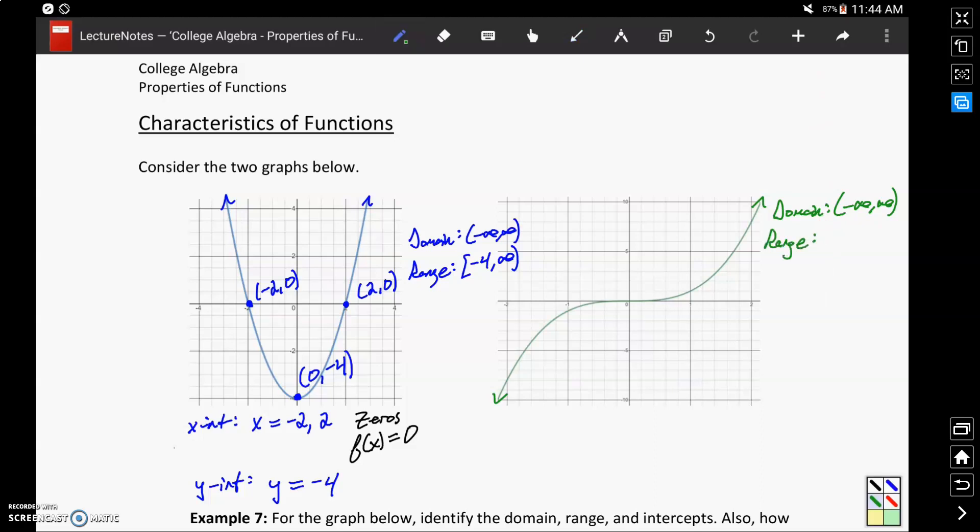Our range though will be different than the previous graph in the sense that now it will be unlimited or unbounded. Since that function is increasing in one direction, decreasing in the other, we'll never achieve a maximum or minimum y value we can hit. It will just continue to increase.